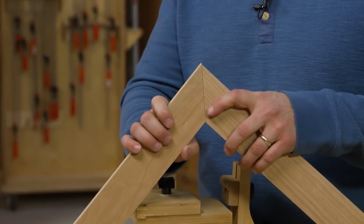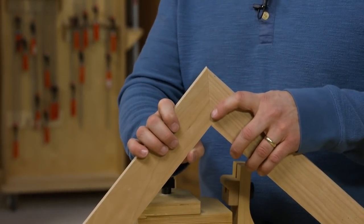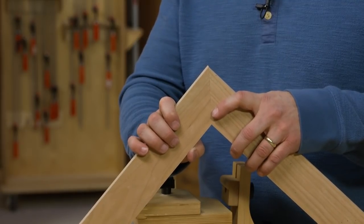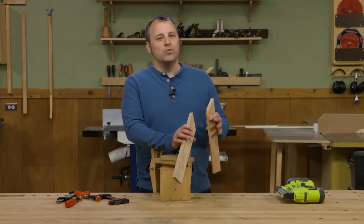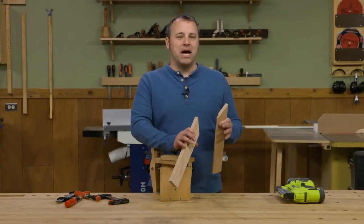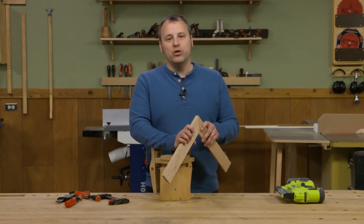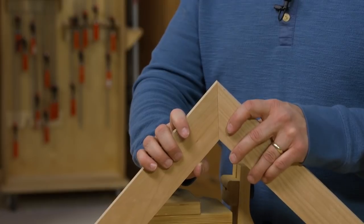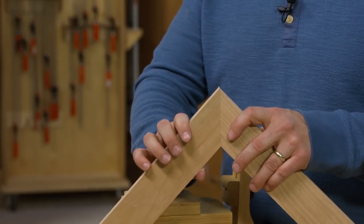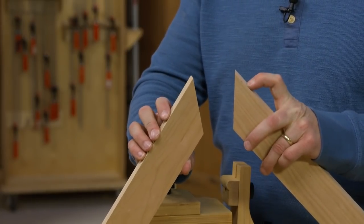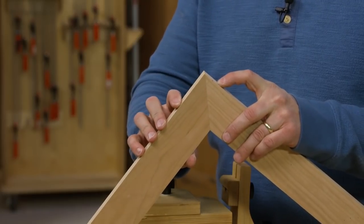Second thing is once you go to glue up that miter joint, there's really no good way to clamp it up because the joint faces are at 45 degrees to any of your reference edges. So as soon as you start putting glue on and clamps, things start sliding around all over the place.